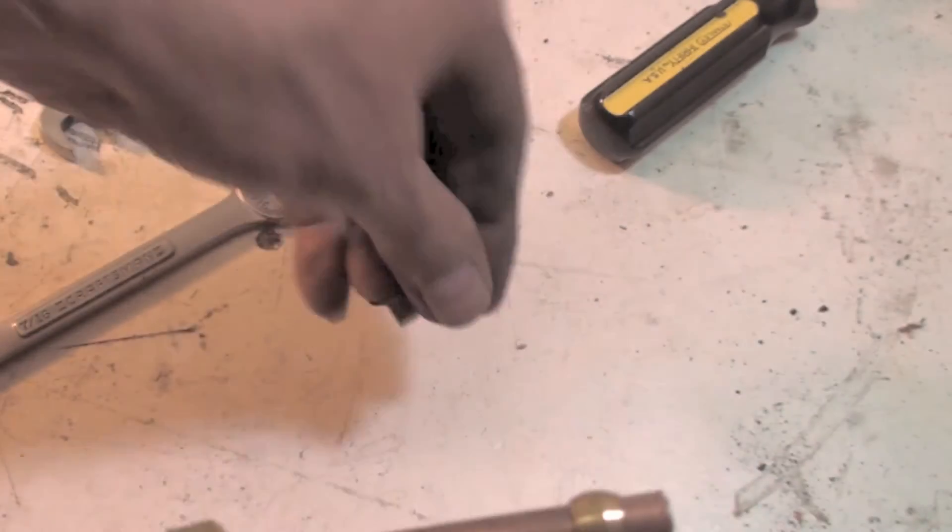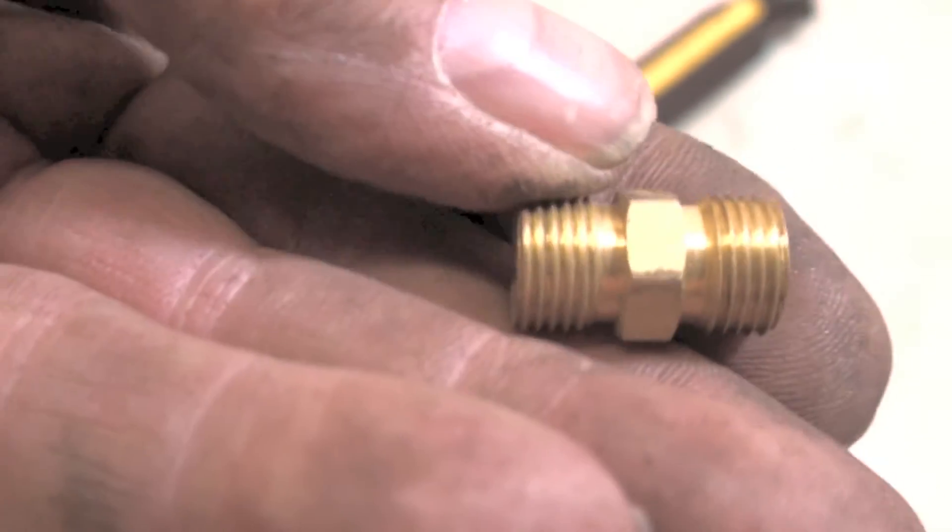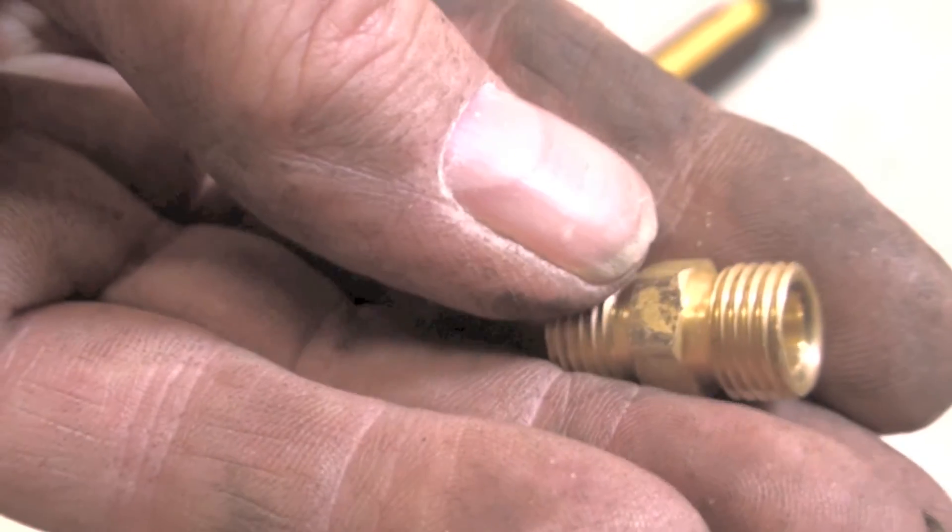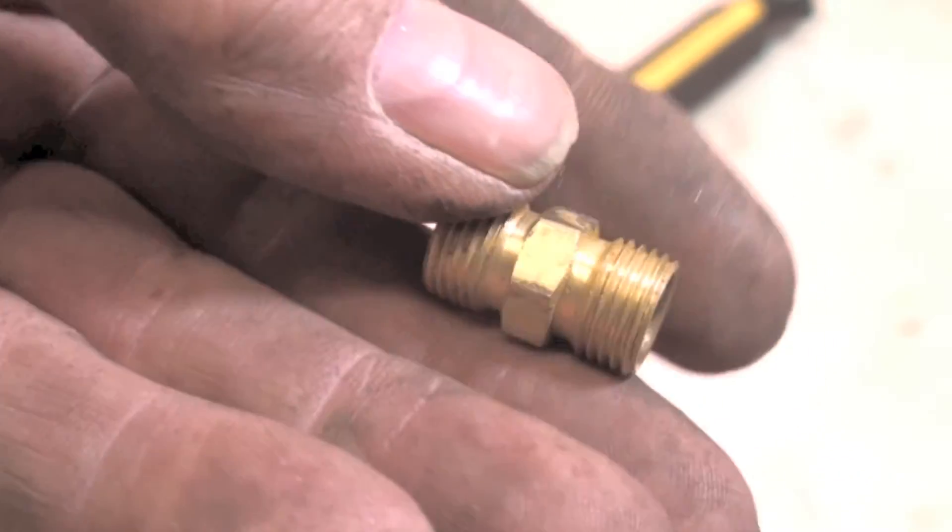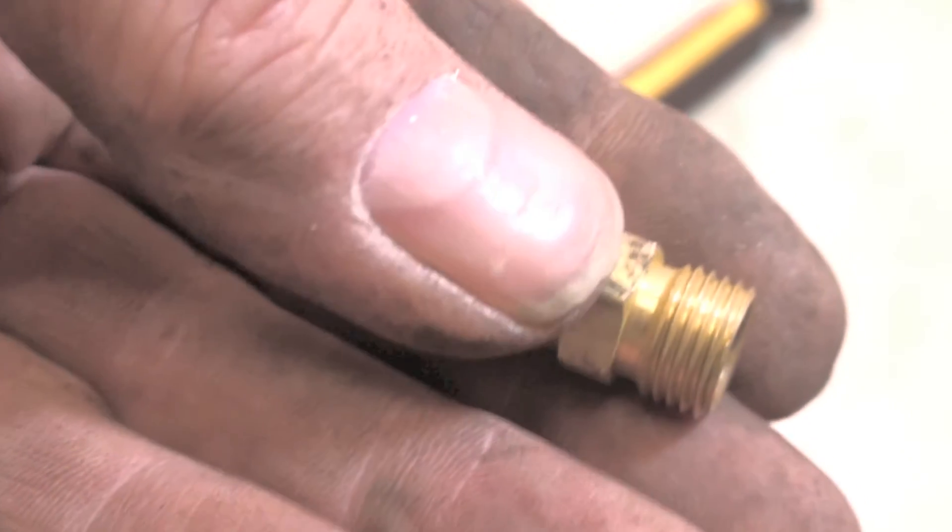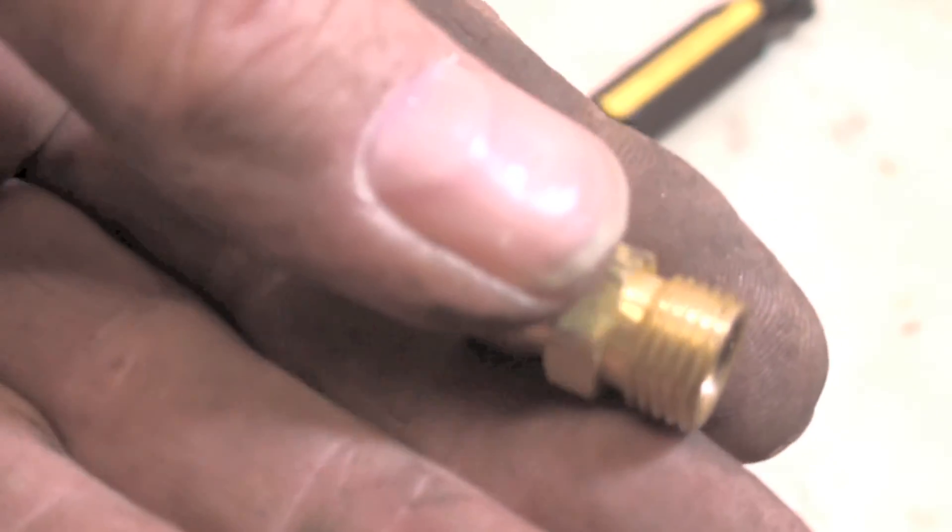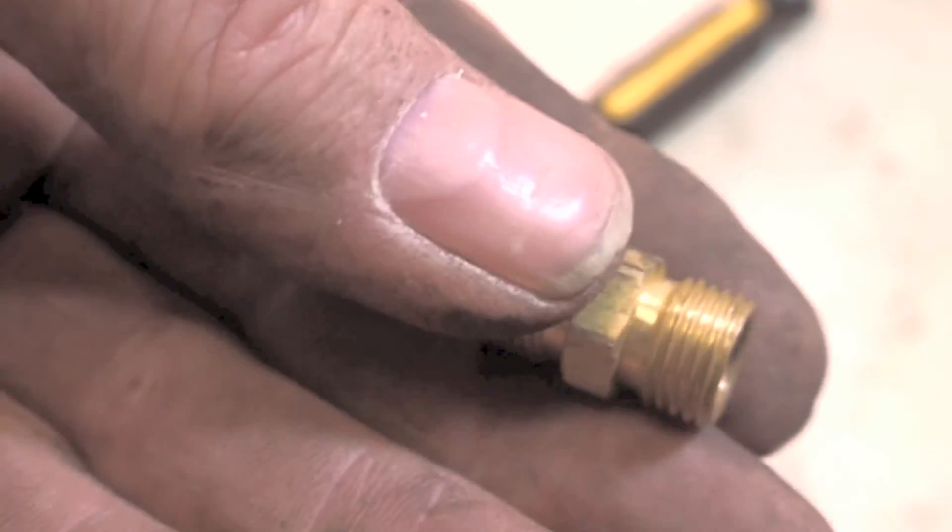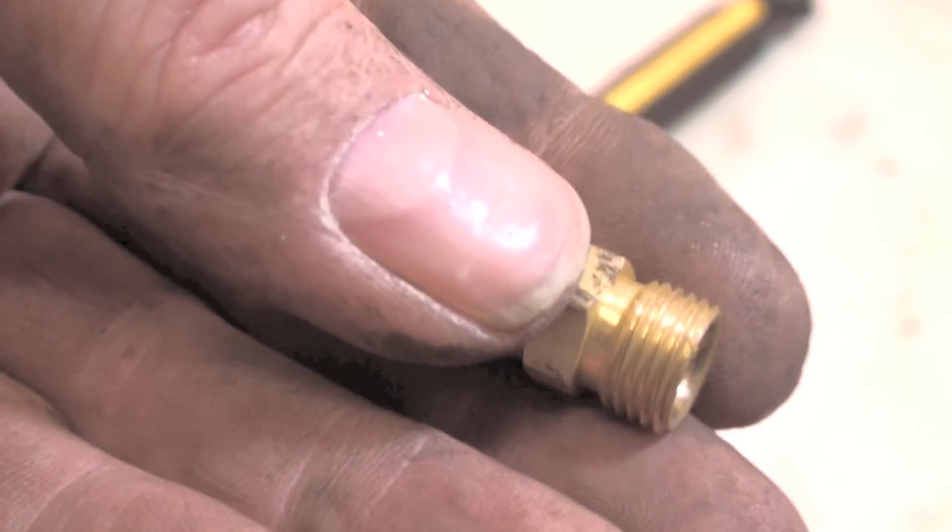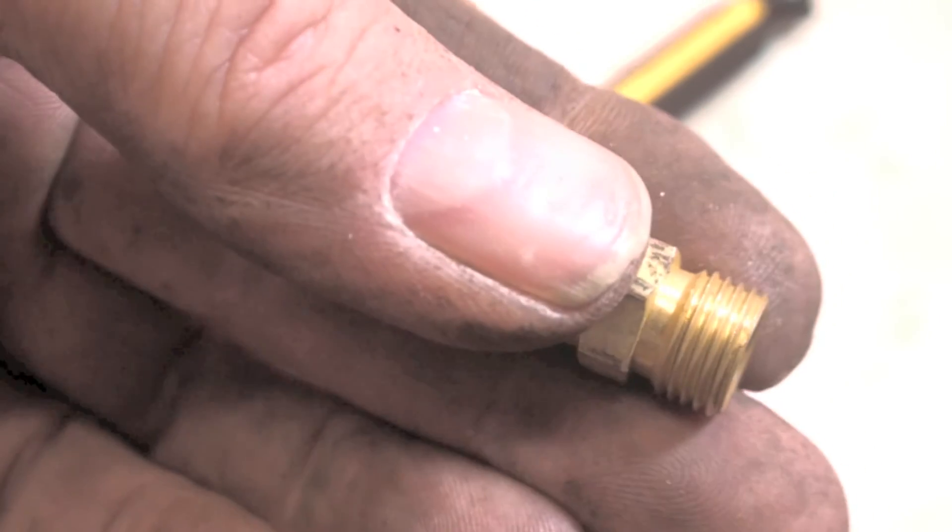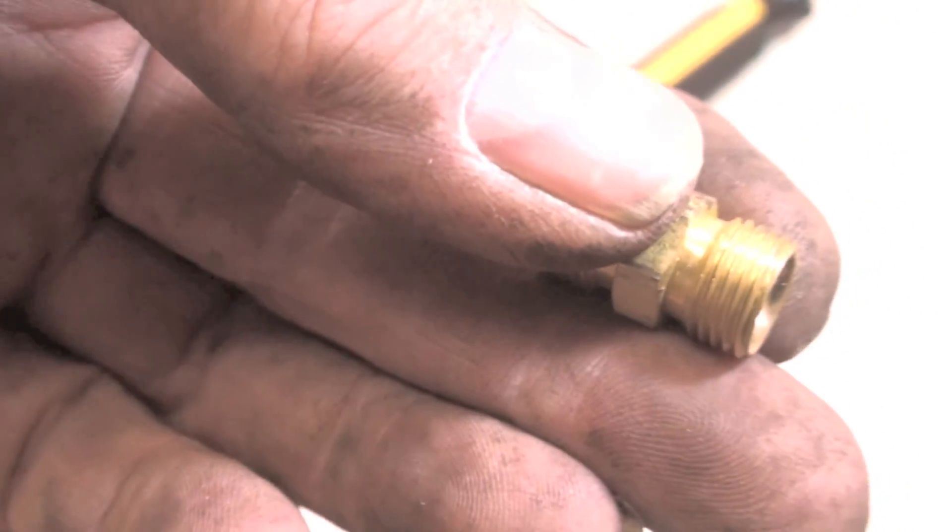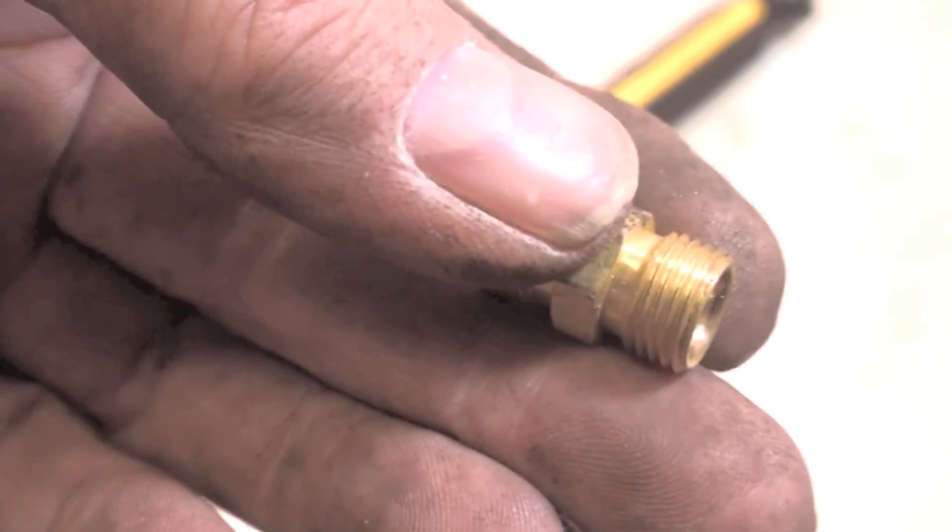If you want to, you can put some pipe dope on the threads. The reason you're putting pipe dope on the threads is not to seal it—because pipe dope is a sealer but it's only for tapered threads—but it's a lubricant. You can use oil too. If you tighten down with some sort of lubricant on the threads, the pressure you're putting on there with your wrenches will be transferred to the fitting rather than being eaten up on the threads.